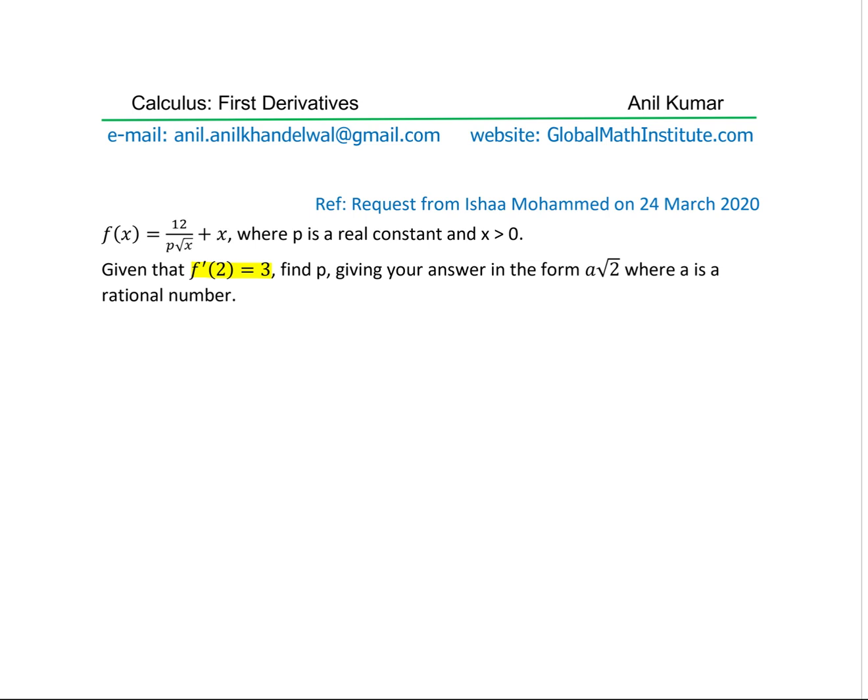Let us begin with the given function itself, which is f of x equals 12 over p square root x plus x. Let me write this in a simplified form as f of x equals 12 over p times x to the power of minus half plus x.